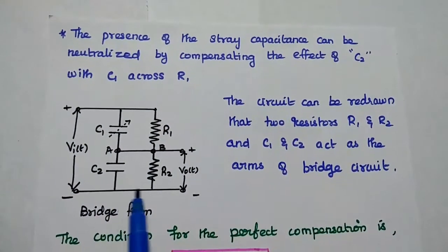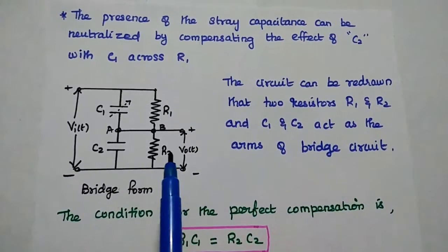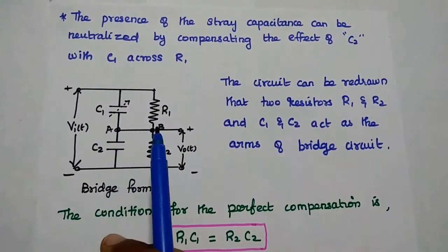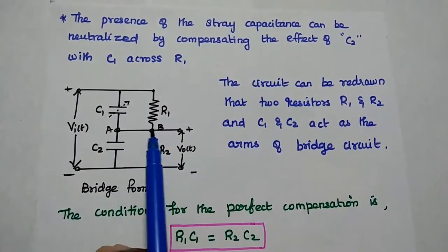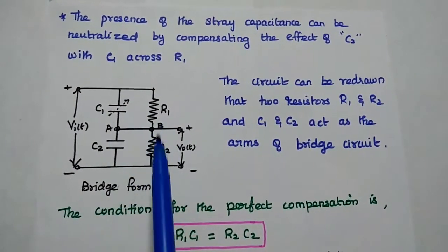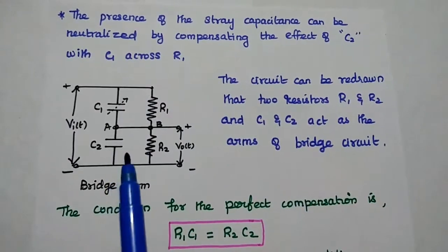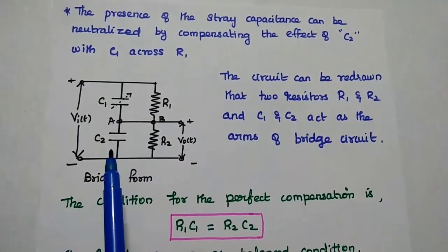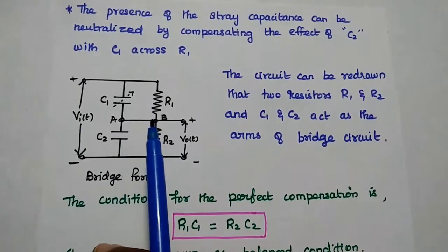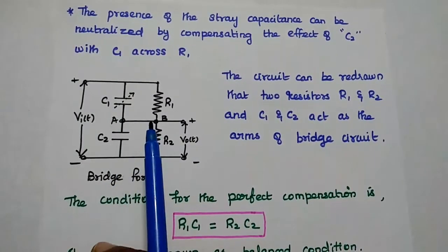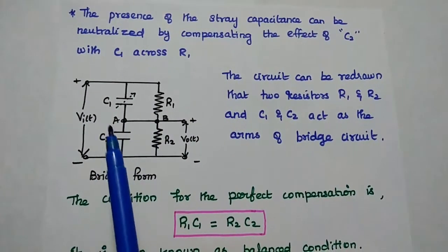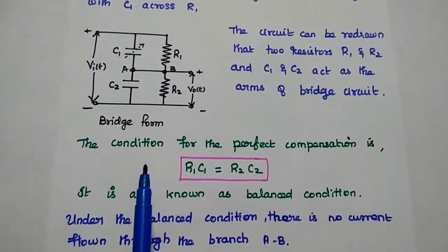Here the circuit can be redrawn using the bridge method. In this method we can consider this A and B as a bridge line or branch line for this bridge. If we make R1 C1 equal to R2 C2, then this line cannot be considered. There is no current flow. If there is no current flow we can simply ignore this capacitive effect.